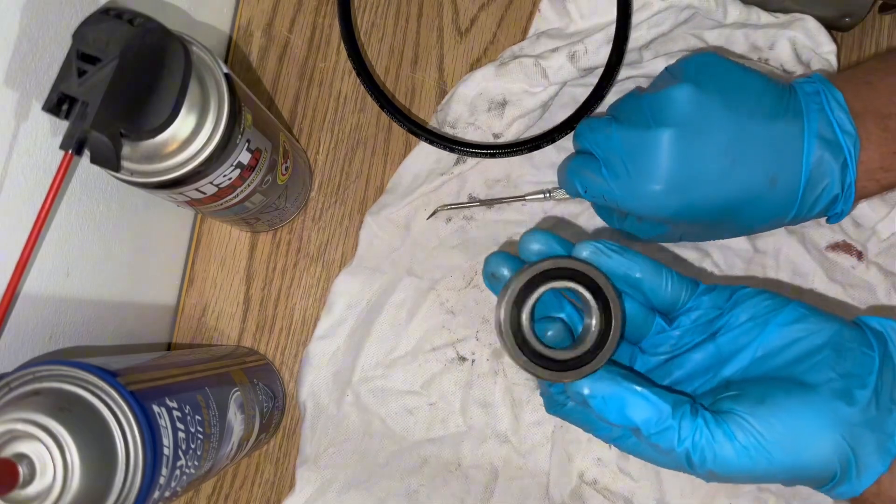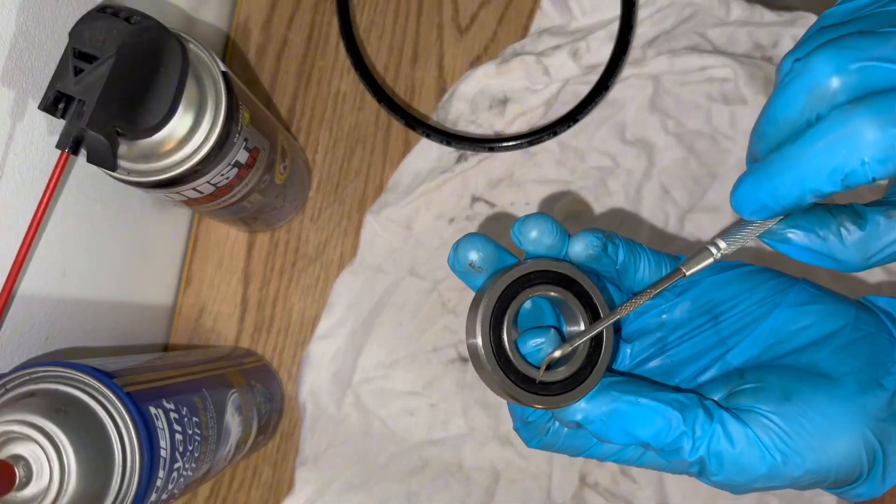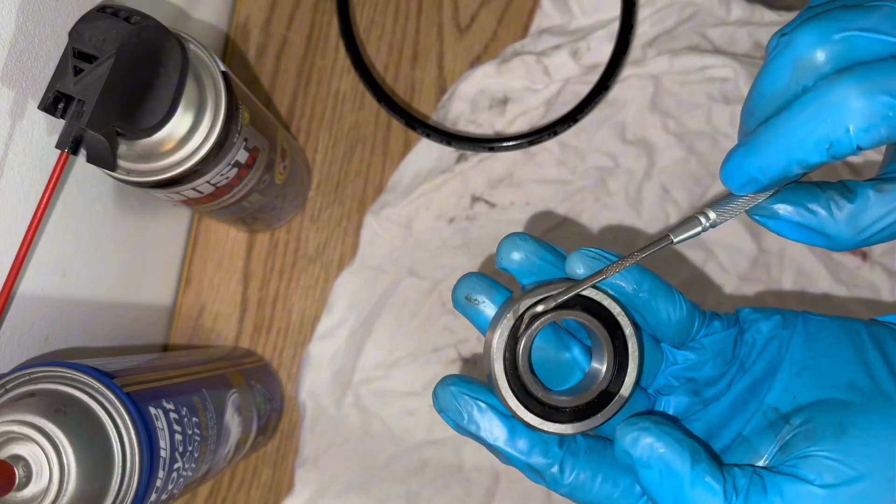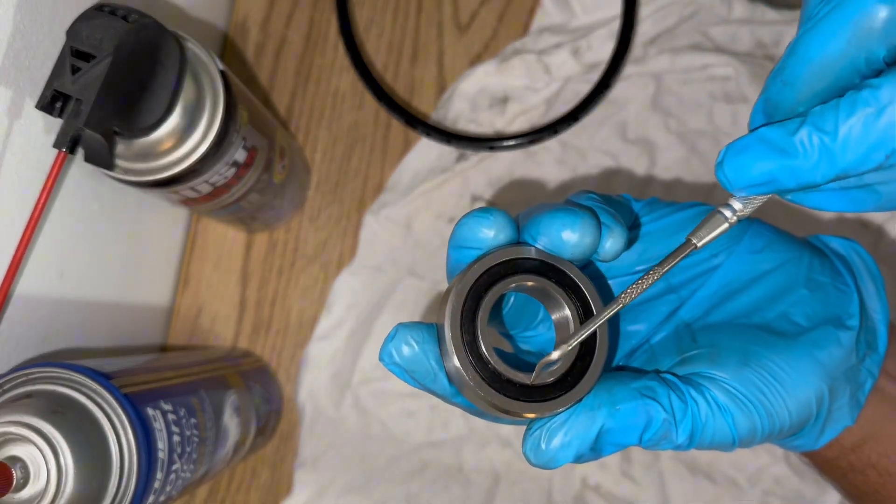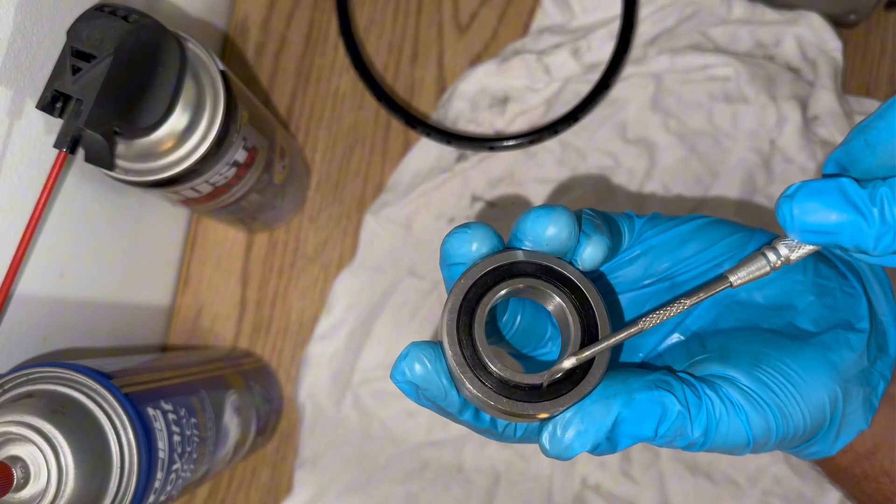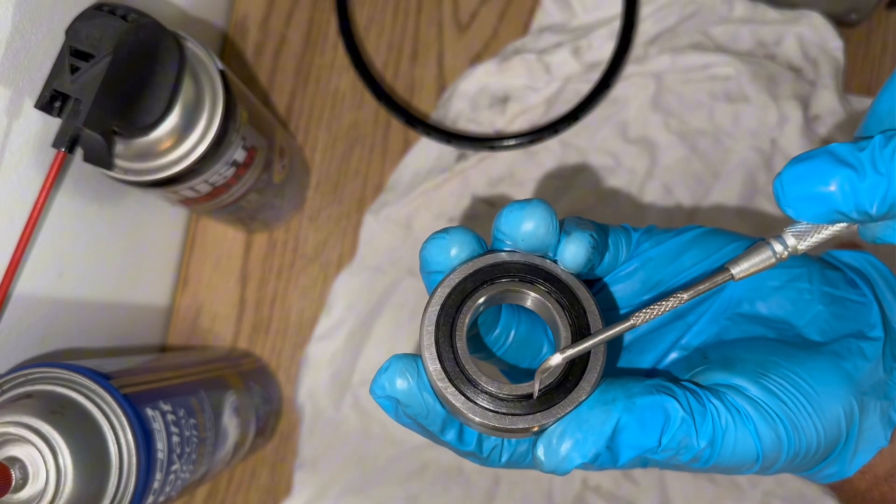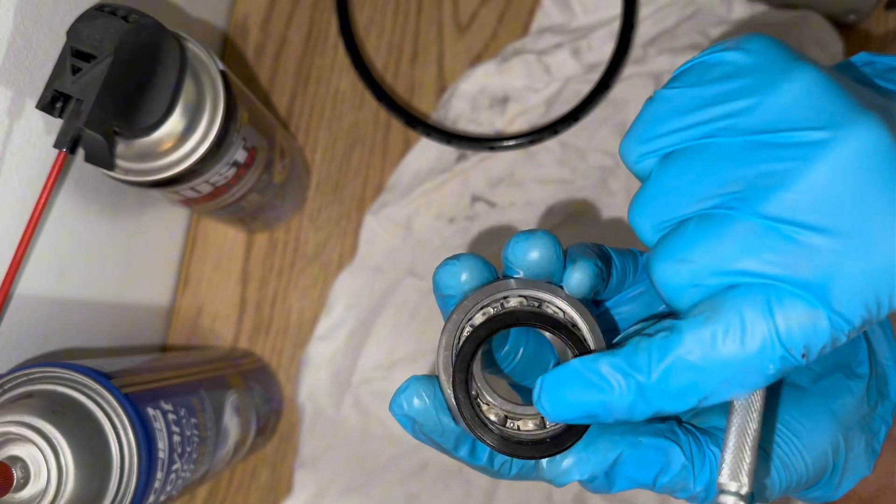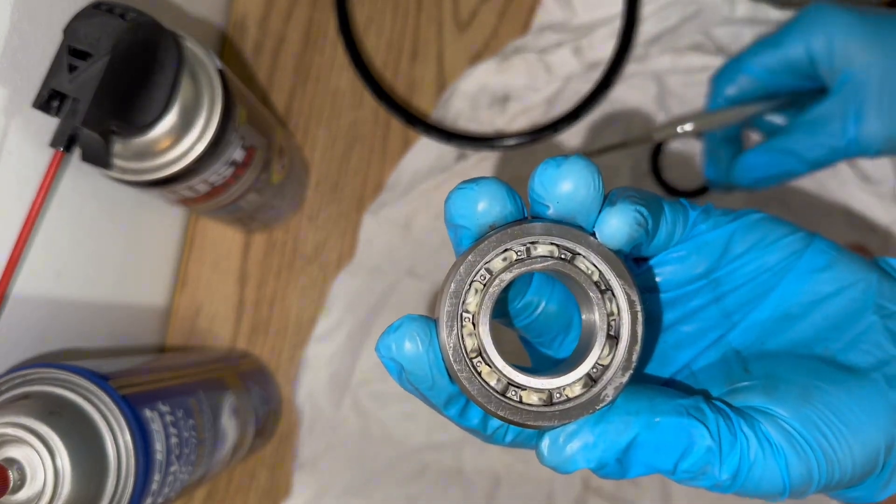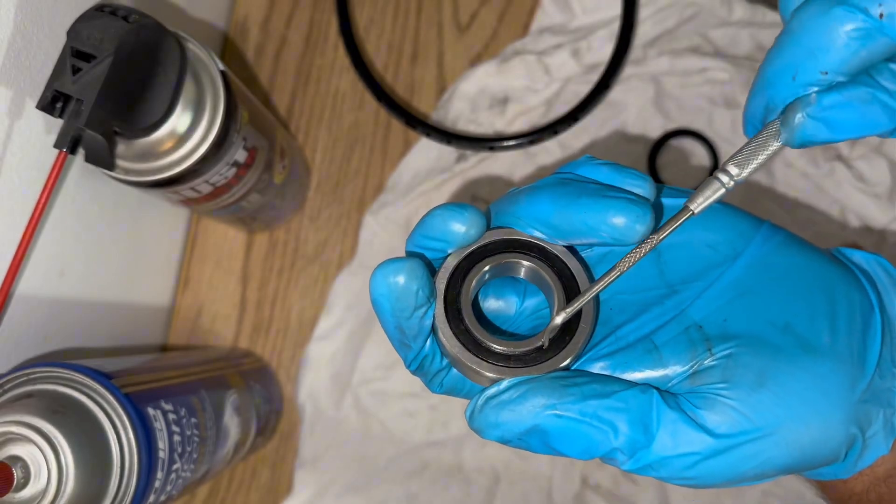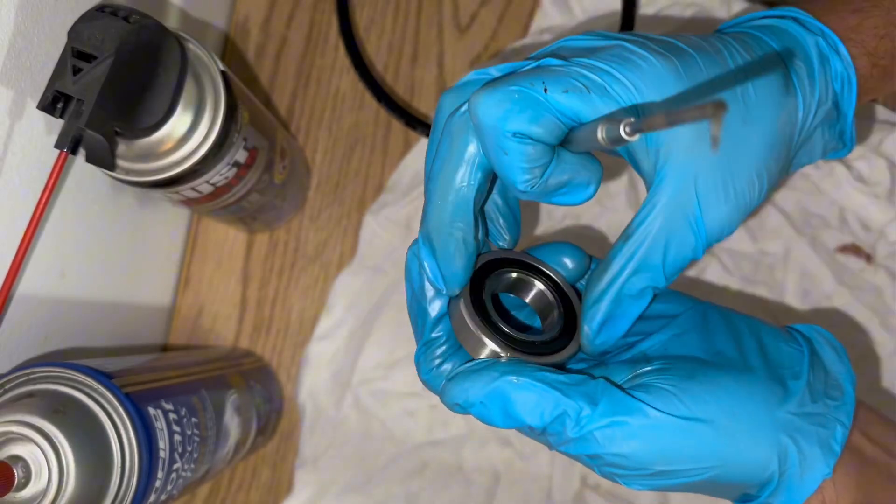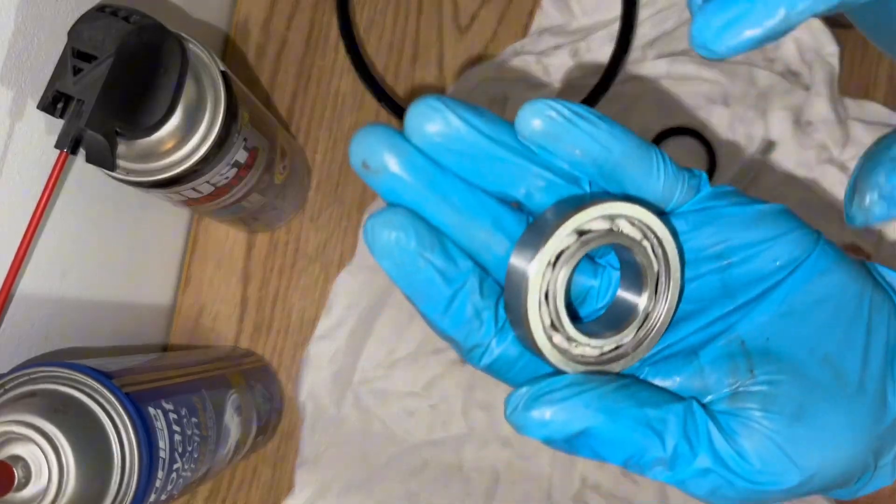So first thing you need to do is grab your ball bearing, and you'll notice each side has a plastic cover over top. So you're going to grab a pick and slide the pick in right underneath the jacket like that and pop it off. And you'll see there's the inner workings there. Flip it over and do the same. Nice and easy.